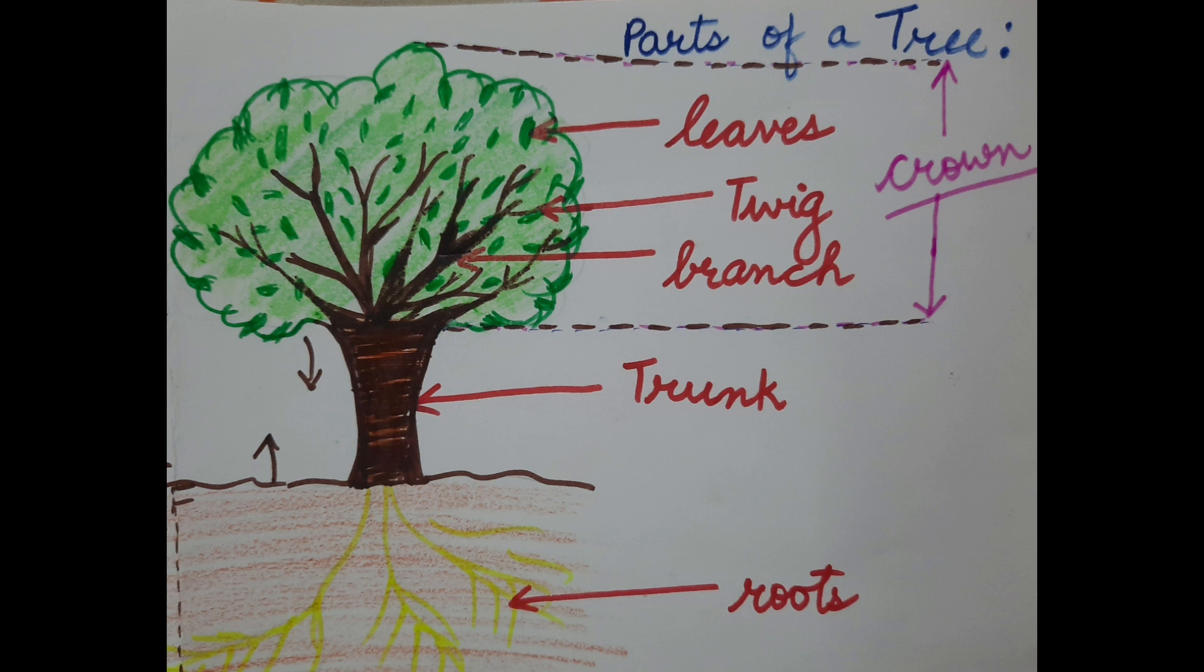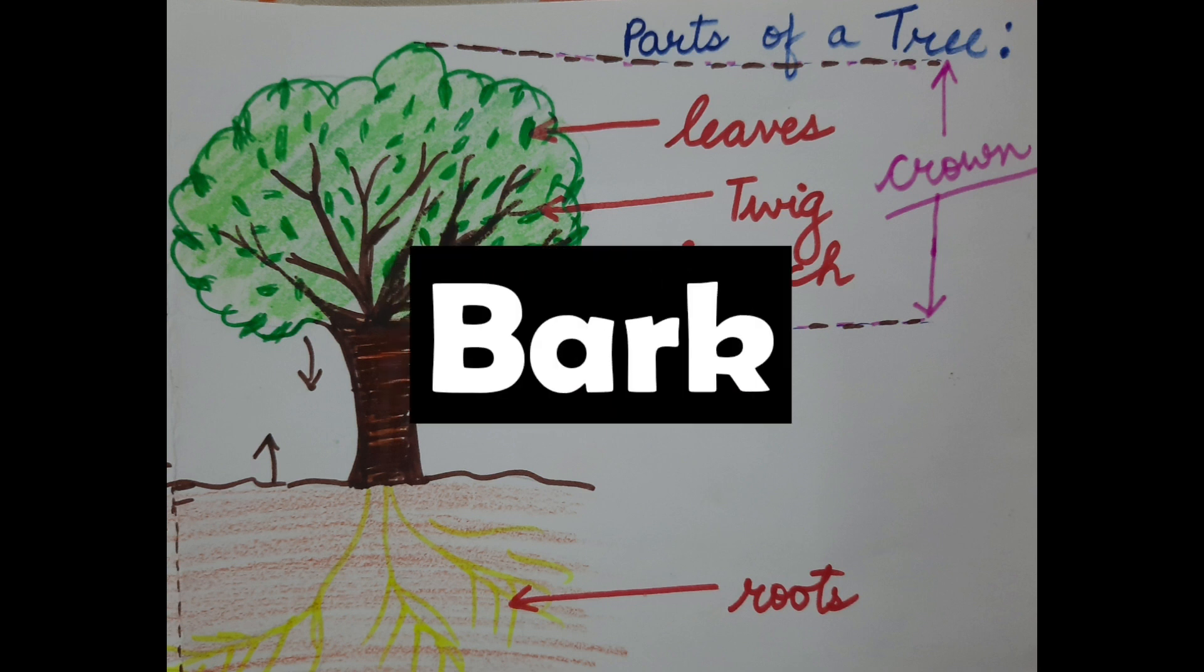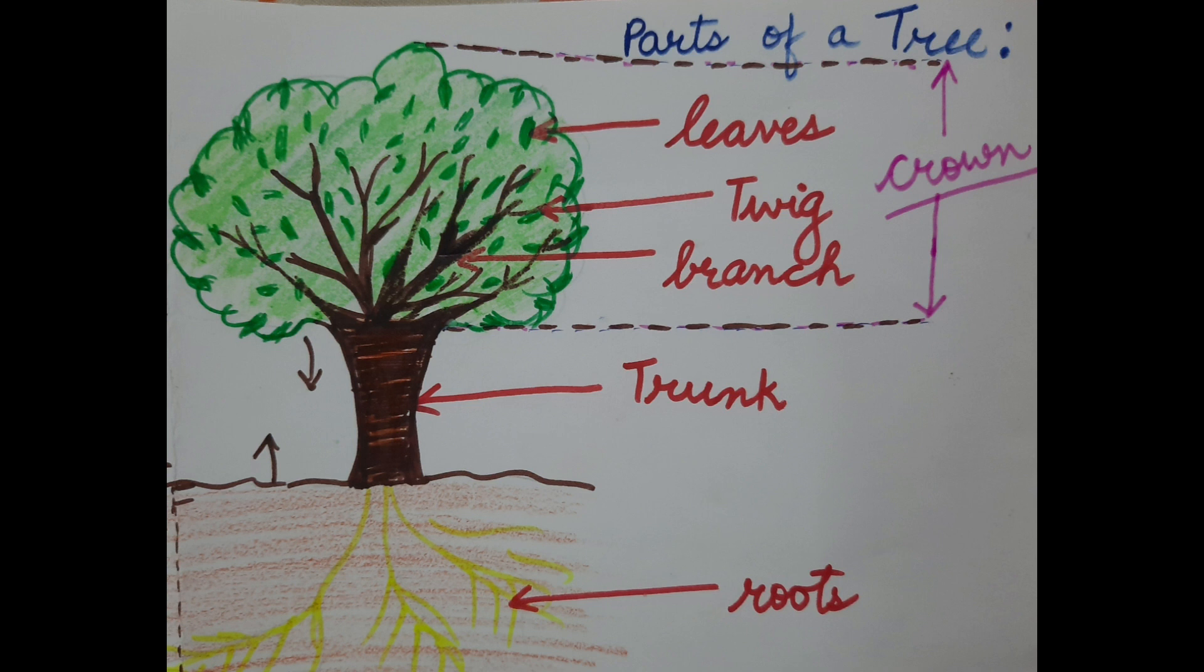Now, we all know that trees have branches. The branches we see are covered in a layer called bark. The branches give the shape to the crown.